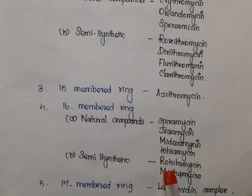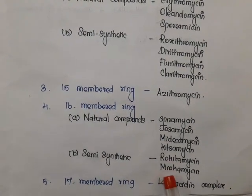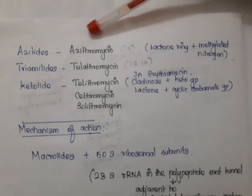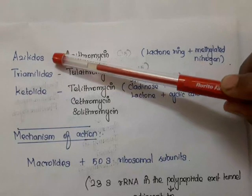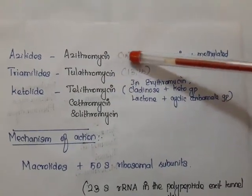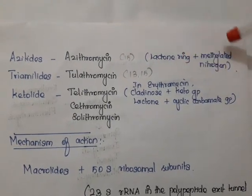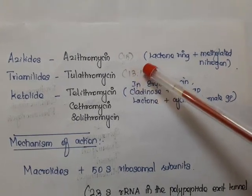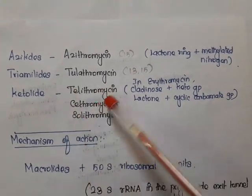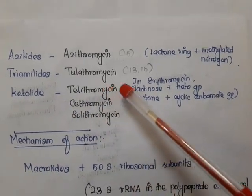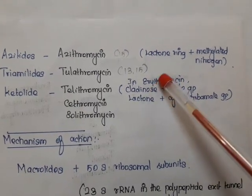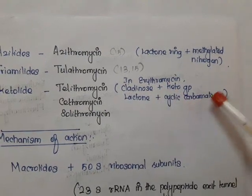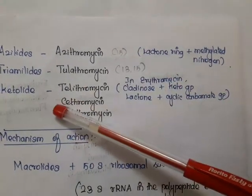For 16-membered rings, natural examples are spiramycin, josamycin, midecamycin, and kitasamycin; semi-synthetic examples are rokitamycin and miocamycin. 17-membered examples include lankacidin complex. Special groups of macrolides are azalides, triamilides, and ketolides. The azalide example is azithromycin — a 15-membered lactone ring with a methylated nitrogen. Triamilide example is tulithromycin, with a 13–15 membered ring. Ketolides — examples are telithromycin, cethromycin, and solithromycin — are derivatives of erythromycin where the cladinose is replaced by a ketone group and a cyclic carbamate group is attached to the lactone.